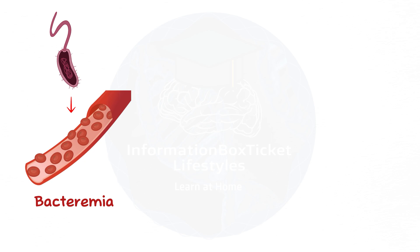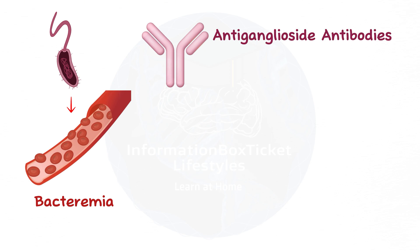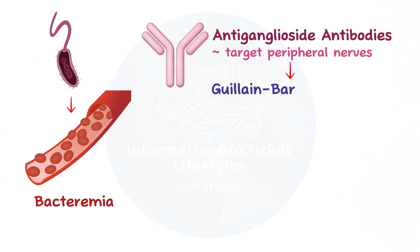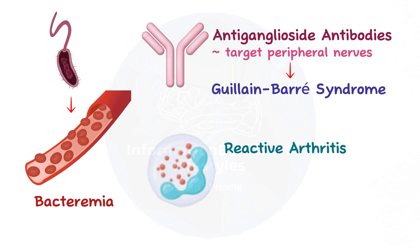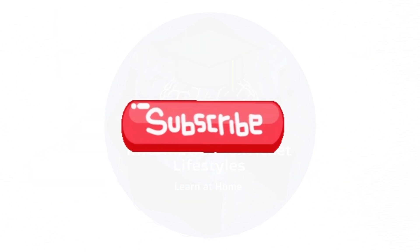Bacteremia can also result from the bacteria continuing to drill until they enter the circulation. In response to blood-borne bacteria, the immune system may produce anti-ganglioside antibodies that target peripheral nerves and result in Guillain-Barré syndrome, a paralysis-like condition. Similarly, an infection may trigger reactive arthritis, an autoimmune inflammatory response in which immune cells target the joints.